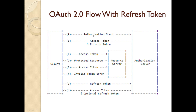Starting from where the resource owner has already provided the authorization grant: the client sends that authorization grant to the authorization server. Once the authorization server verifies the grant is valid, it returns both the access token and the refresh token. Now that the client has the access token, it can request protected resources from the resource server and continue doing so as long as the access token is valid. Once the access token expires, the resource server detects it is no longer valid.